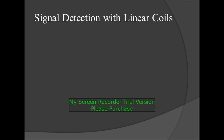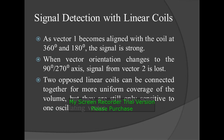Signal detection with linear coils: as vector 1 becomes aligned with the coil at 360 degrees and 180 degrees, the signal is strong. When the vector orientation changes to the 90-degree to 270-degree axis, the signal from vector 2 is lost. Two opposed linear coils can be connected together for more uniform coverage of the volume, but they are still only sensitive to one oscillating vector.